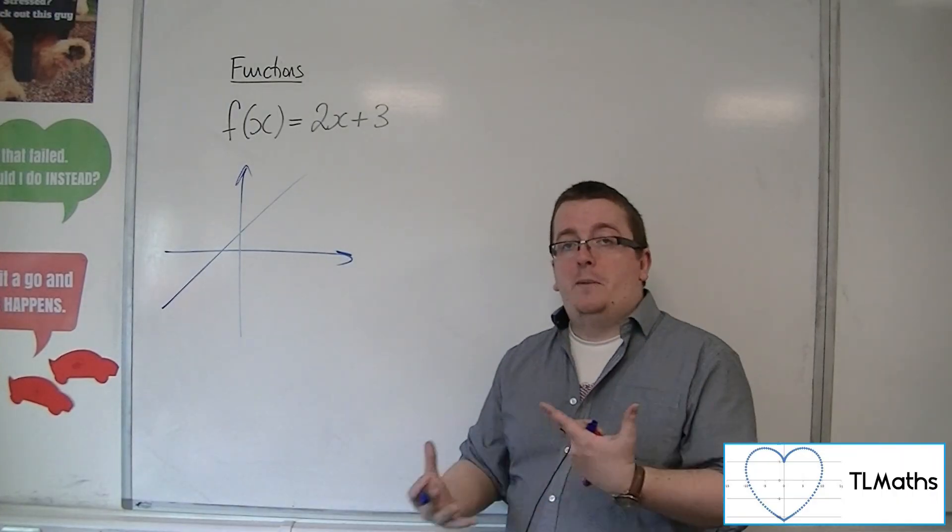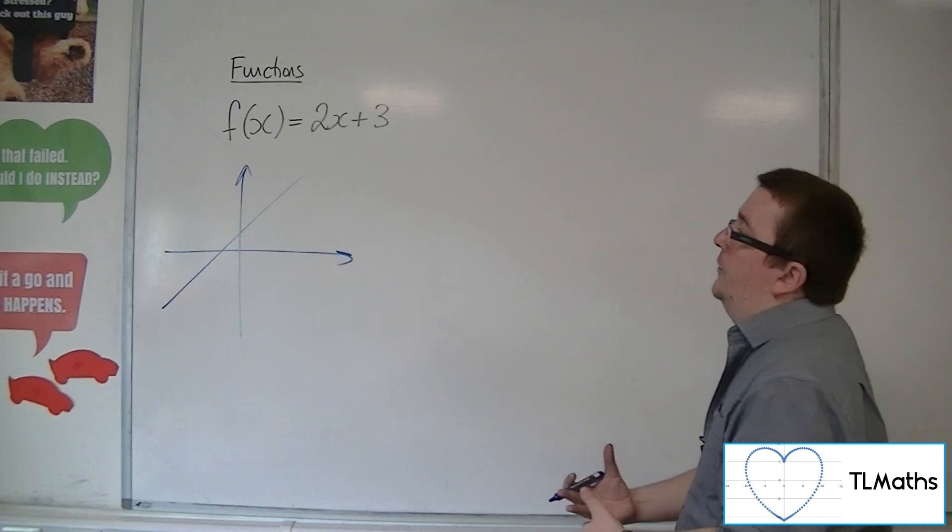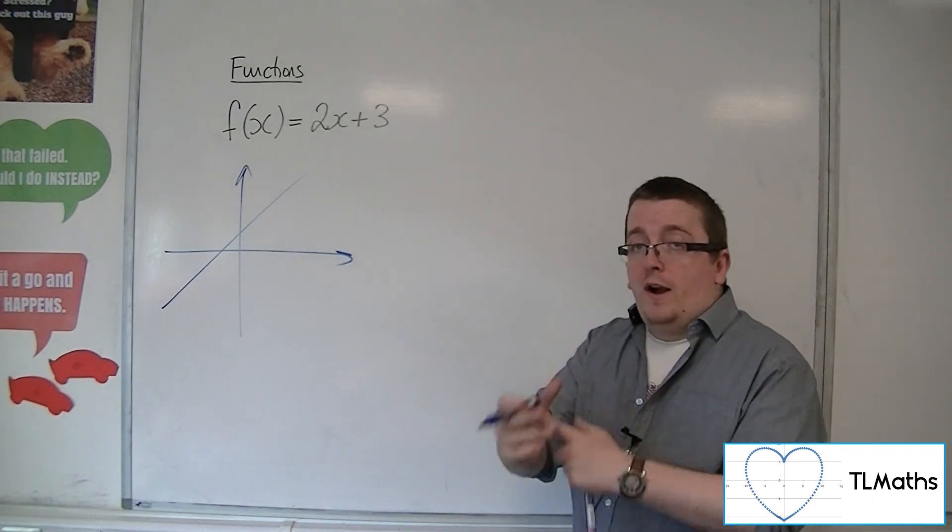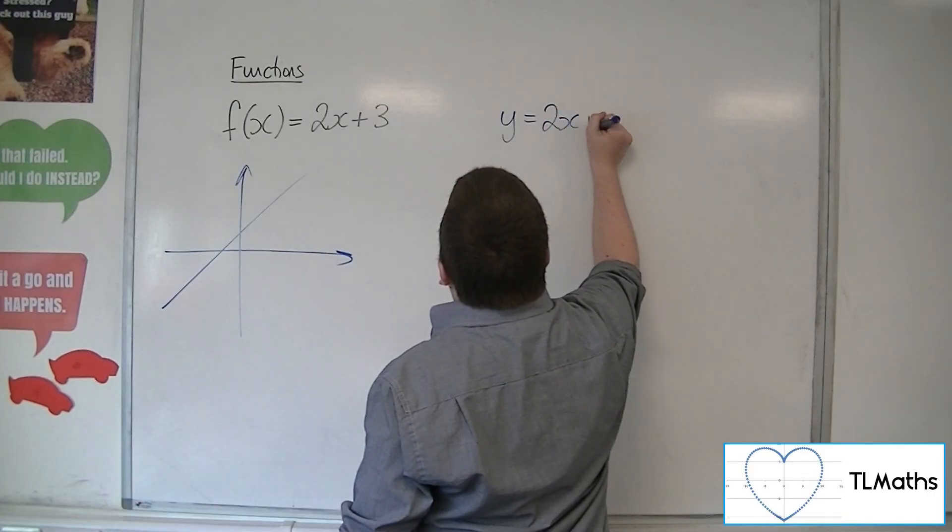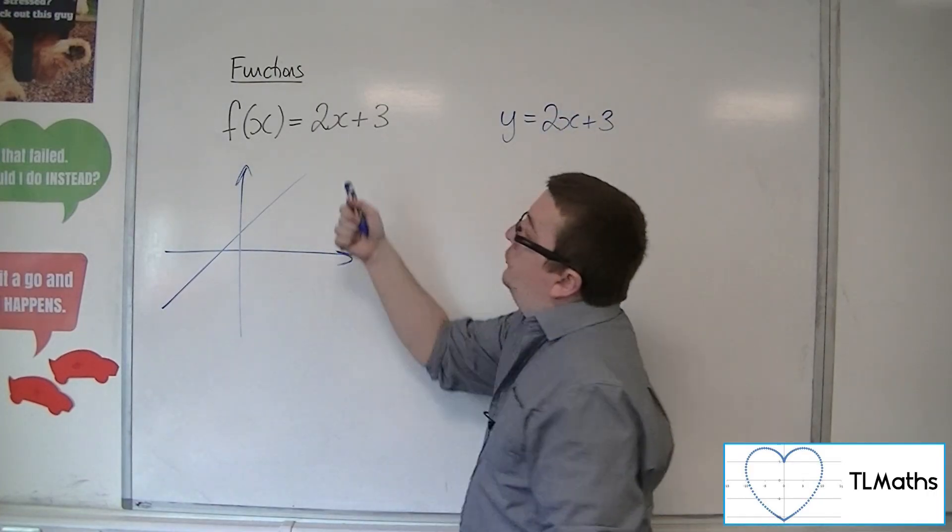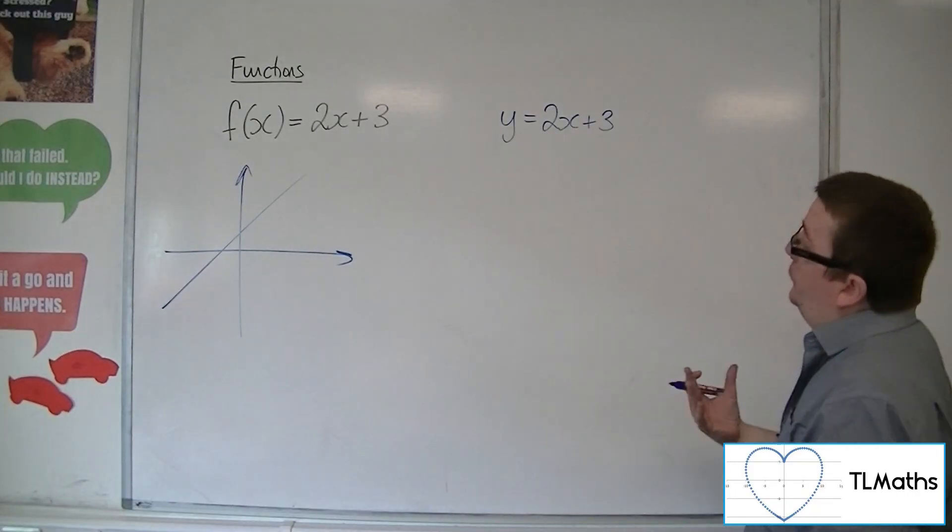so I should be able to find the inverse function. So how it works is you first of all write it as y equals 2x plus 3. So replace the f of x with y. That's step 1.